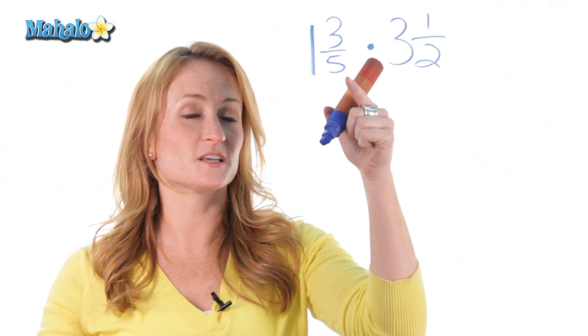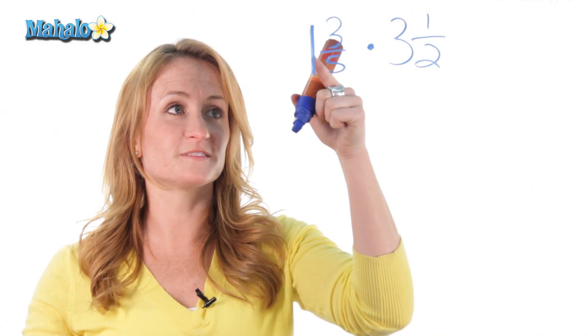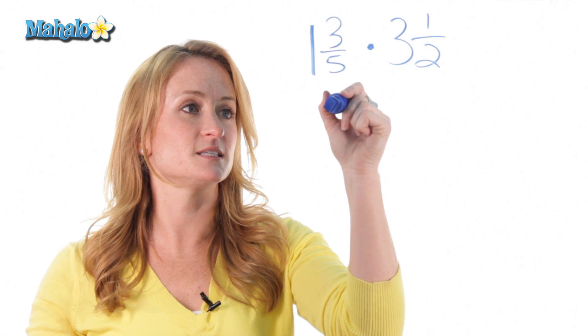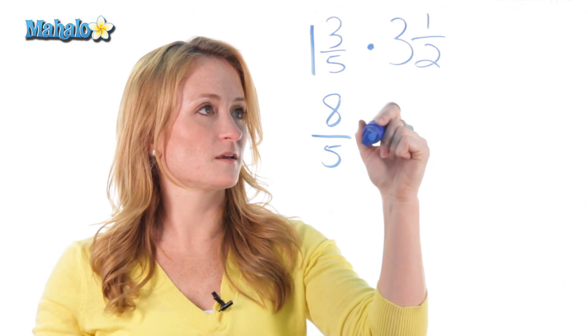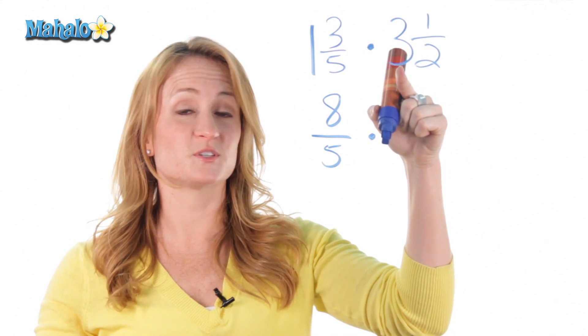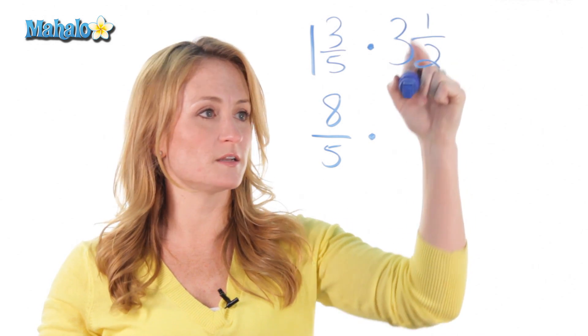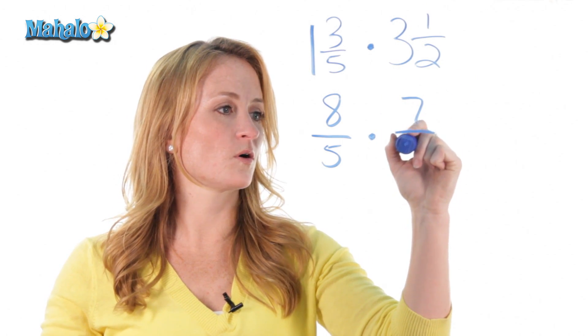So in this case, to turn it into a fraction, 5 times 1 is 5 plus 3 is 8 over the same denominator. And in this one, 3 times 2 is 6 plus 1 is 7 over 2.